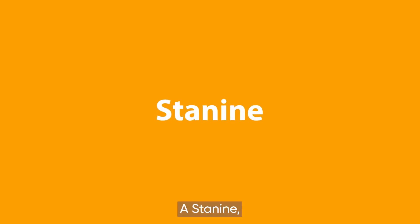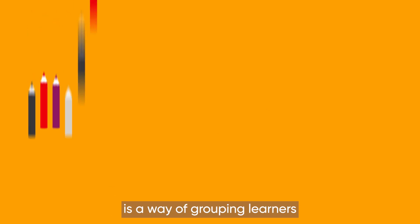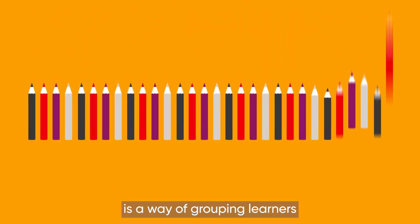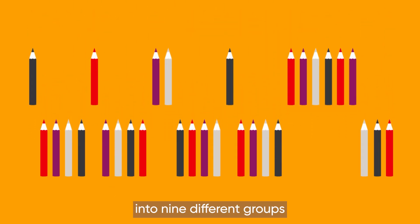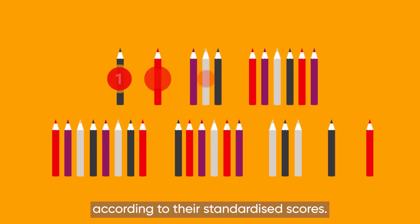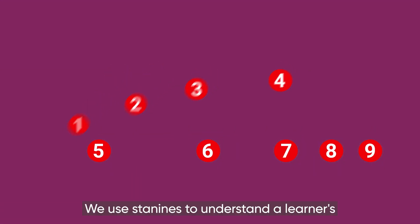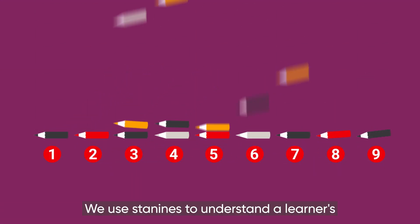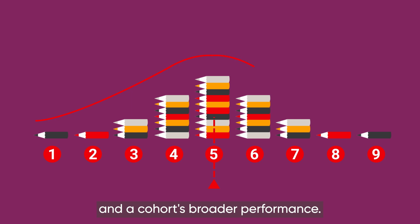A STAN9, short for Standard 9, is a way of grouping learners into nine different groups according to their standardized scores. We use STAN9s to understand a learner's and a cohort's broader performance.